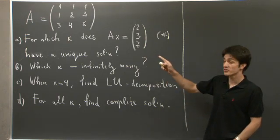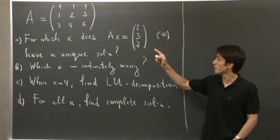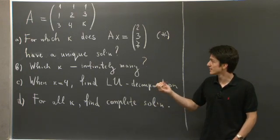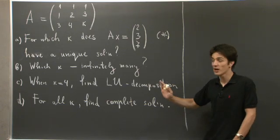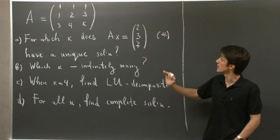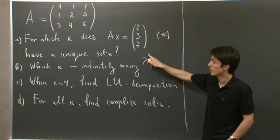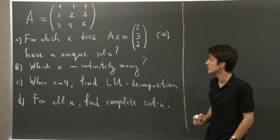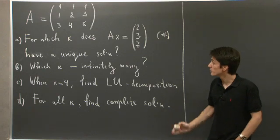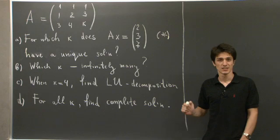We're given a square matrix A, a 3 by 3 square matrix A, where the last entry is a parameter k. And this parameter will vary, and we'll see what happens to the system of equations Ax equal to 237. For which k it has a unique solution, for which k it has infinitely many solutions. Then we'll find the LU decomposition, and finally we'll write down the complete solution to the system.